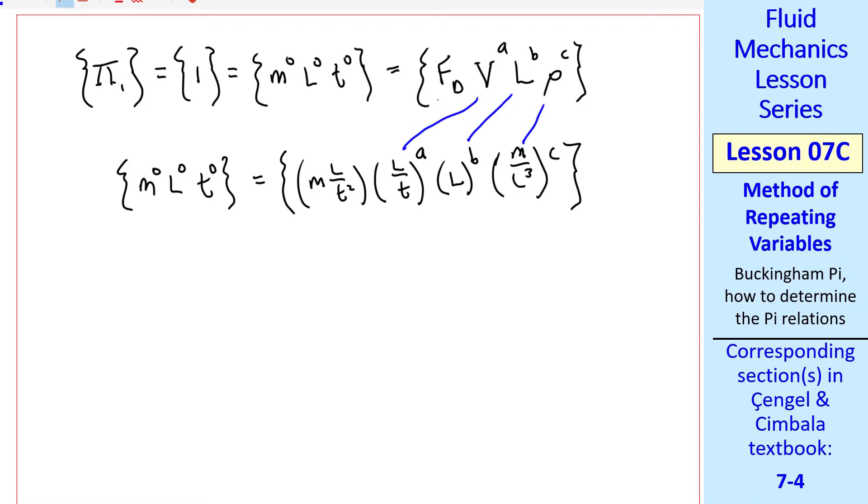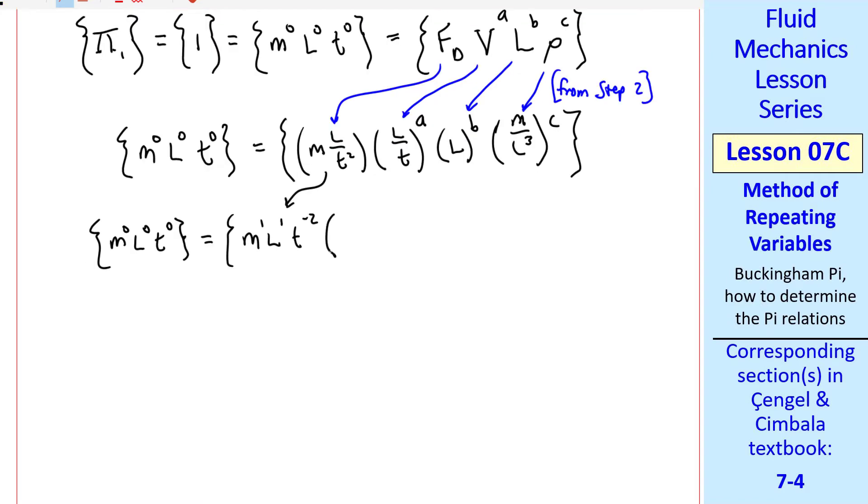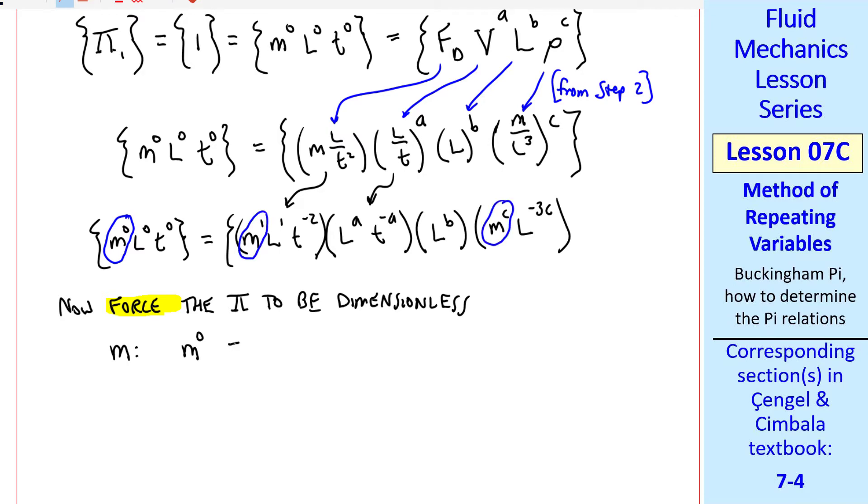As you get more practice, what I'm doing now won't be necessary. But it makes life easier and is more understandable to write everything out this way. L over t to the a becomes l to the a, t to the minus a, etc. Making sure you put a negative sign on the exponent when it's in the denominator. Now we force the pi to be dimensionless. We take each of the primary dimensions represented in the problem. I'll do m first. We equate the left side with the right side. The left side is m to the zero, and the right side is m to the one, m to the c, which equals m to the one plus c. Equating exponents on the left and the right, zero equals one plus c, which we can solve. C equals negative one.